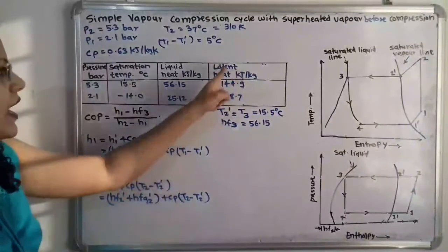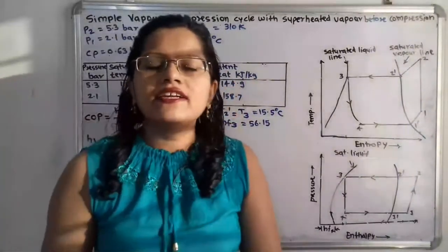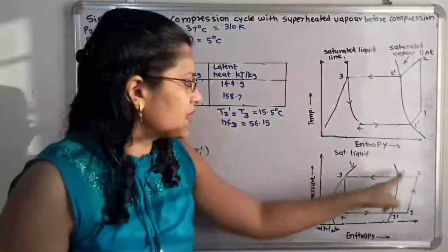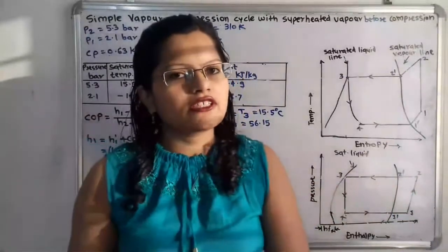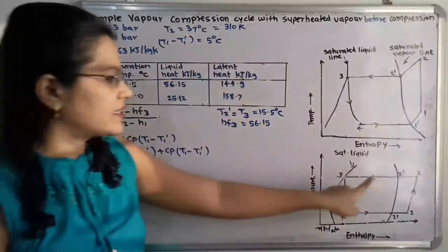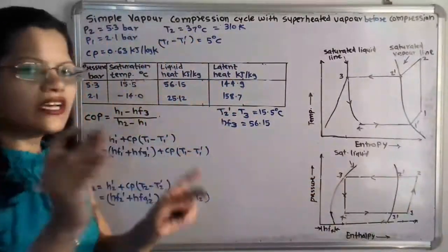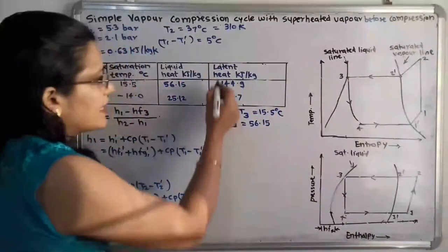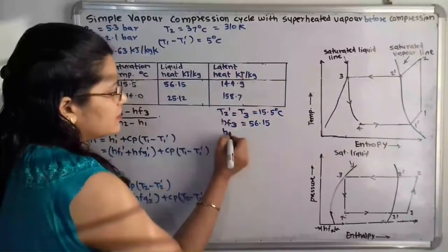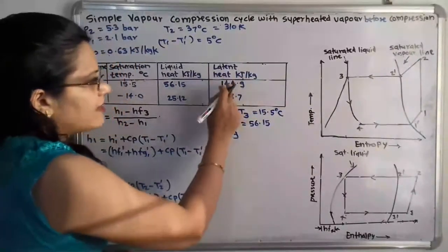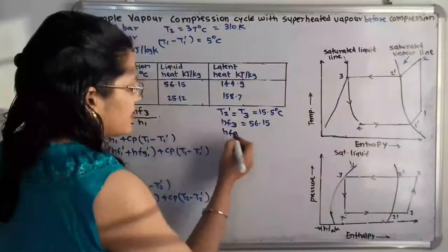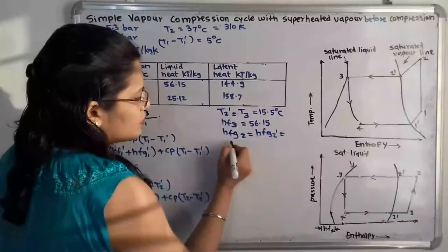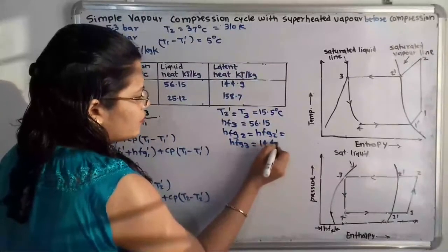The latent heat is the heat involved in the phase change process during process 2-dash to 3. So hfg2 = hfg2-dash = hfg3 = 144.9 kJ/kg.